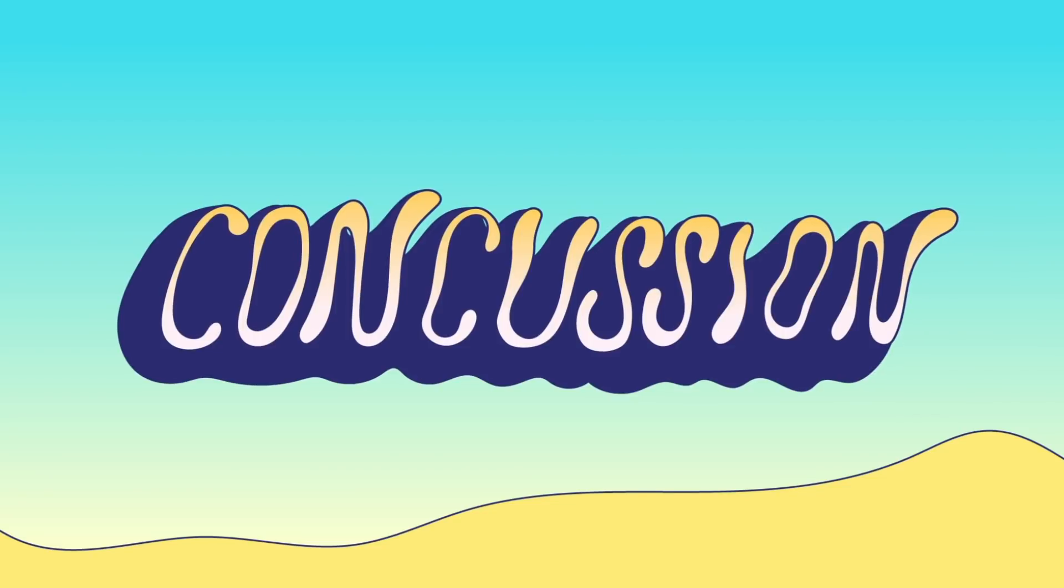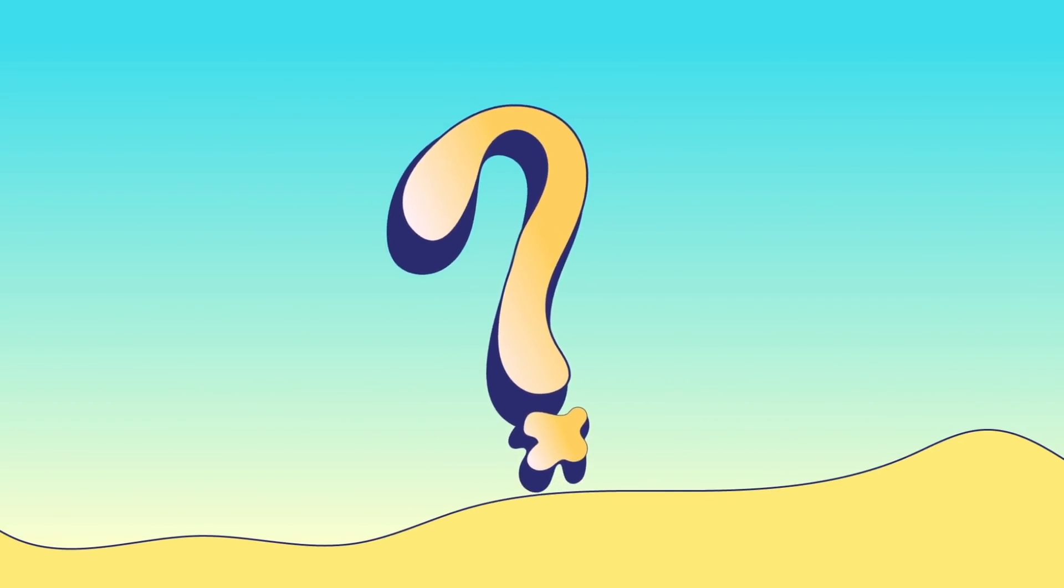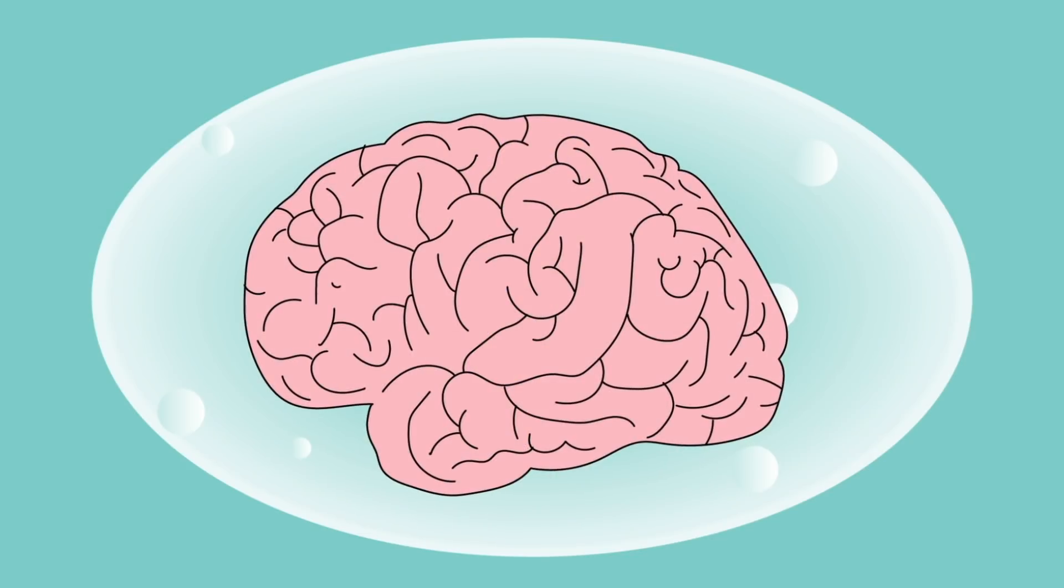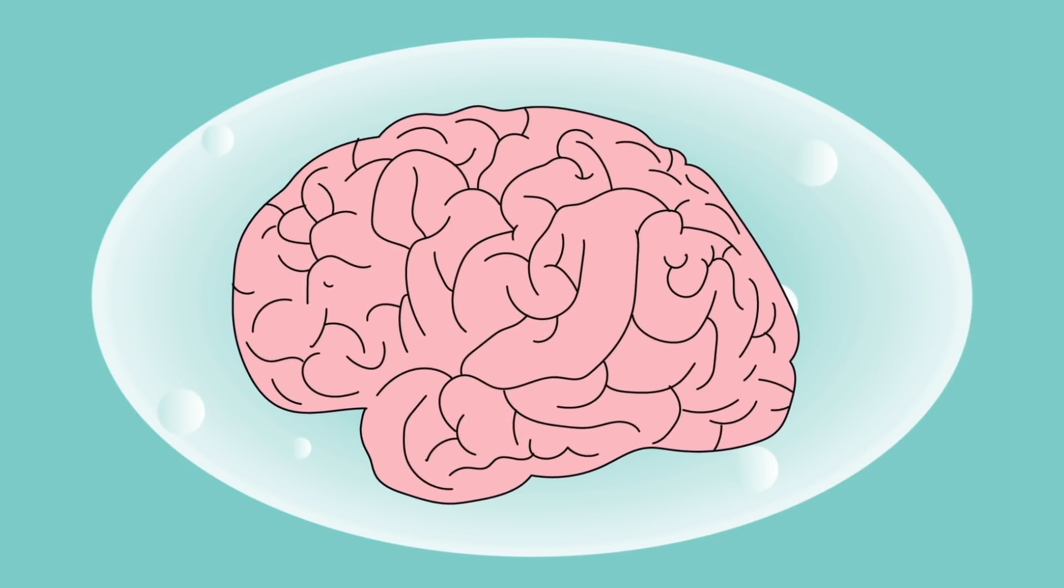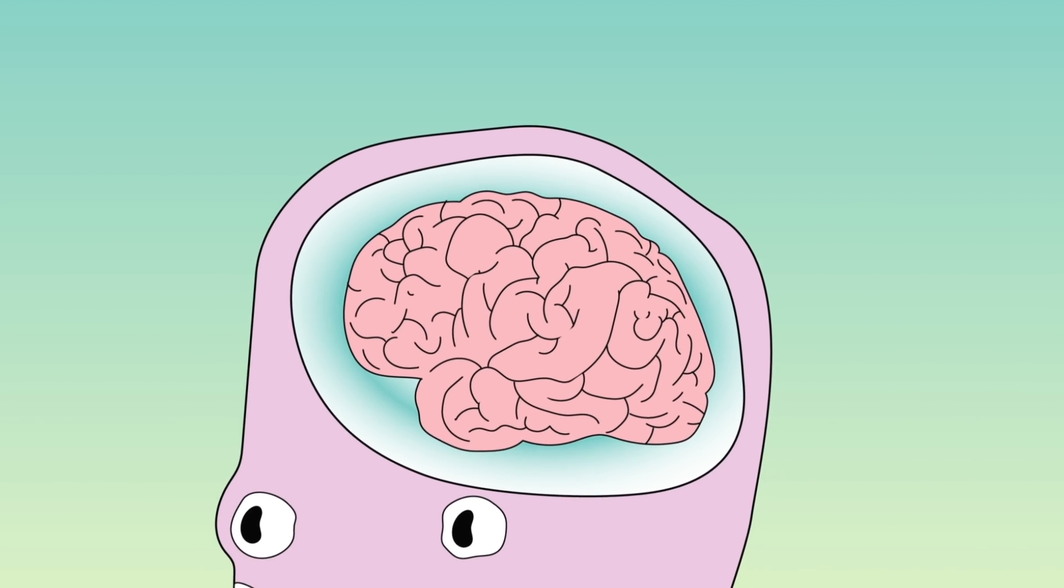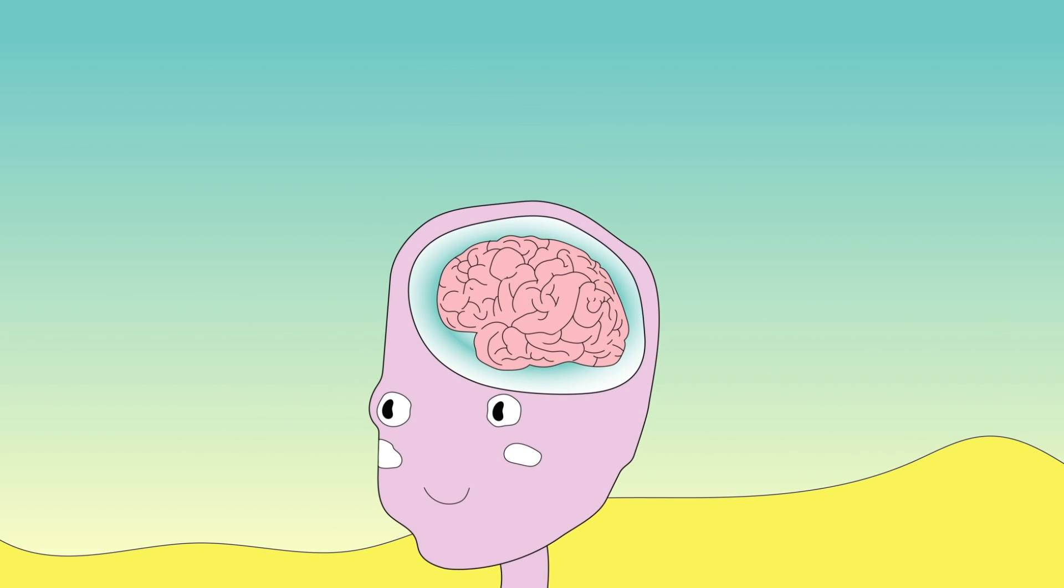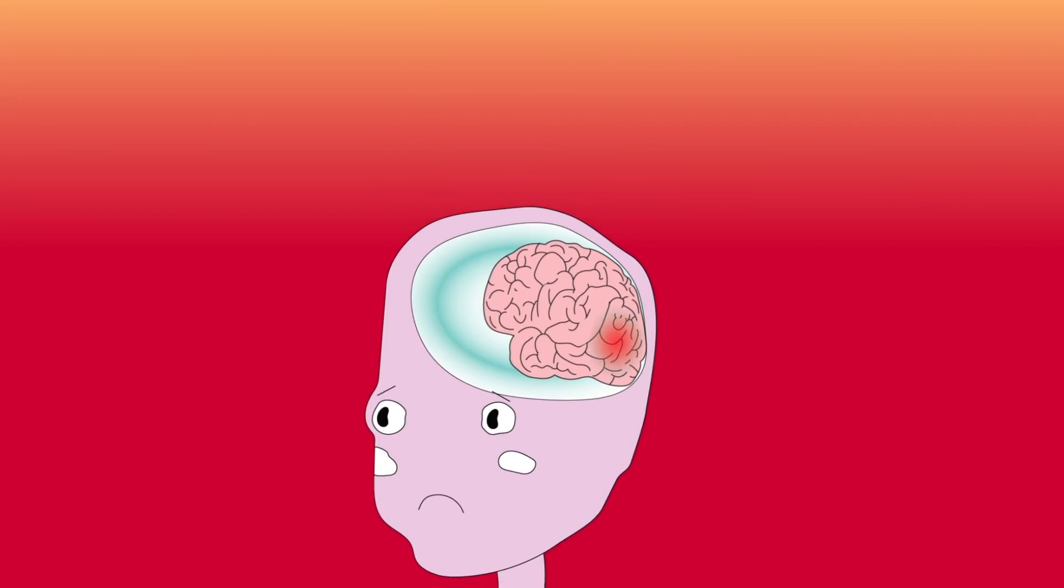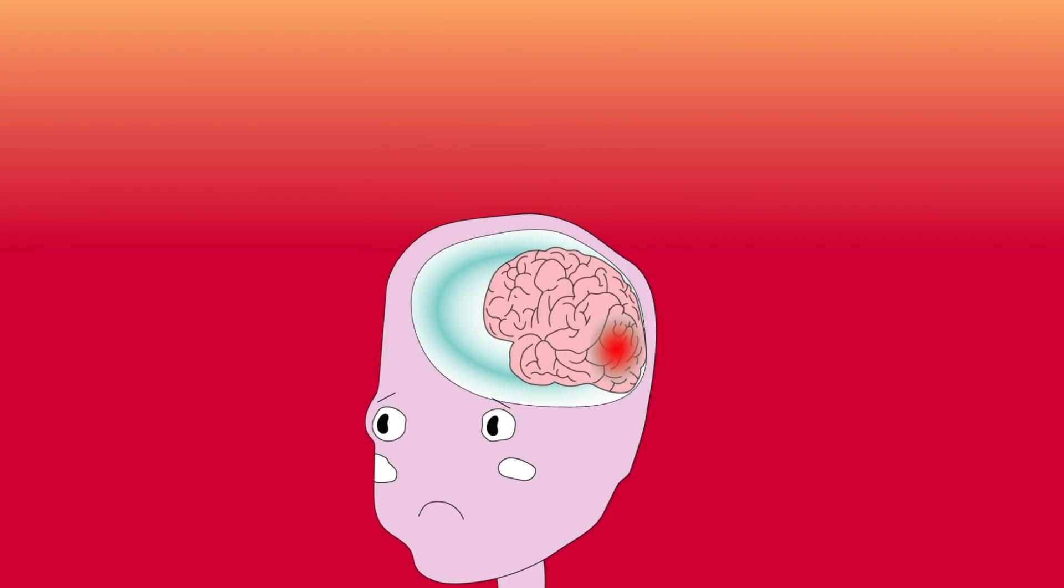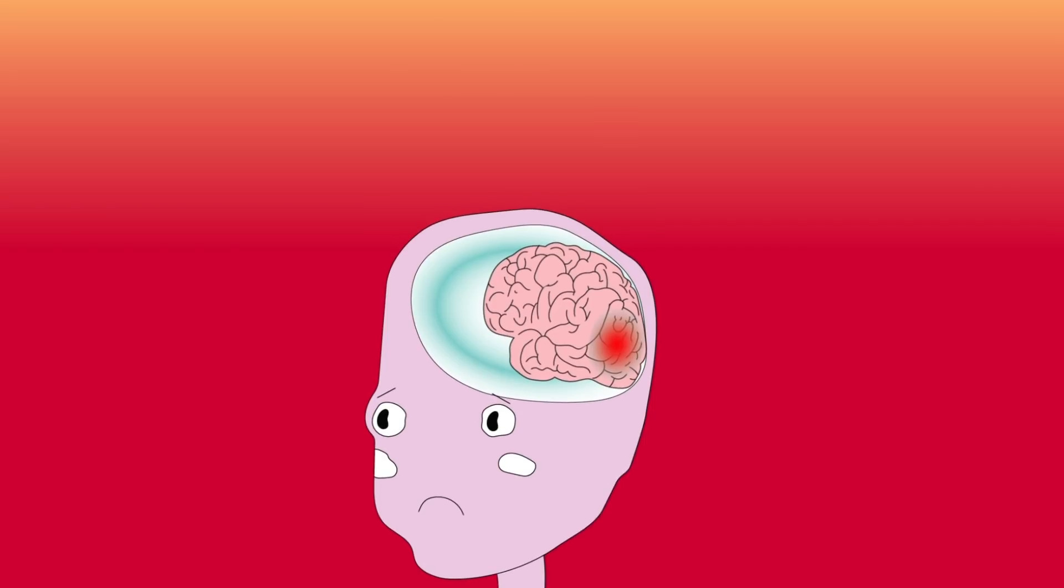Concussions are also called mild traumatic brain injuries. You might be wondering, how do these types of injuries occur? Normally, your brain is suspended in a cushioning liquid called cerebral spinal fluid. This fluid allows your brain to stay put, even as your body moves. But the high force impacts associated with a concussion overwhelm the protection provided by this special fluid.